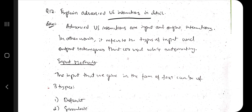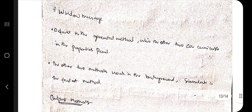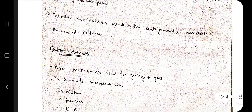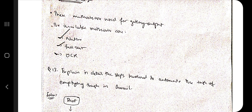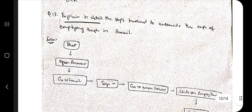The next question is: explain advanced UI interactions in detail. There are two categories — input methods and output methods. For input, there are three types: Default (most widely used but slowest), Simulate (fastest), and Window Message. For output, there are three types: Native (for local systems), Full Text (retrieves all visible text in text form), and OCR — Optical Character Recognition.